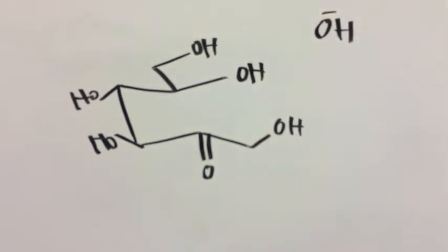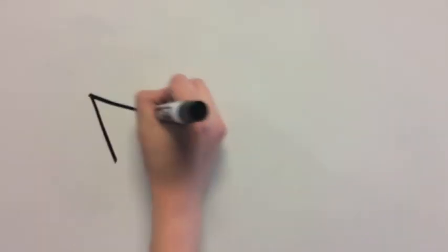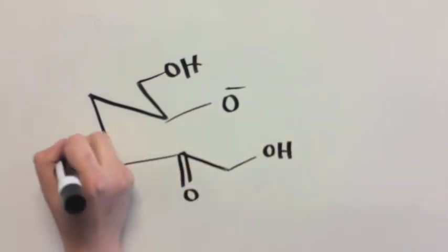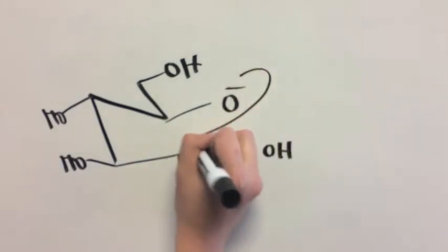Another base will deprotonate this oxygen, giving it a negative charge, as we've already seen. Just kind of a negative guy, really. And because it's negative, this oxygen is now ready to attack at the newly formed ketone, forming a five-member ring.